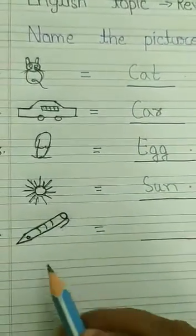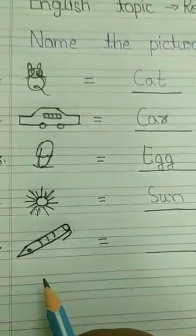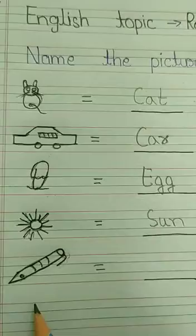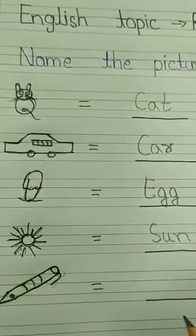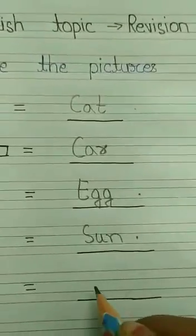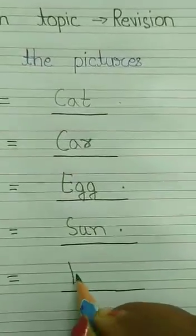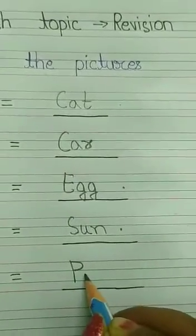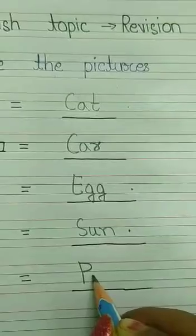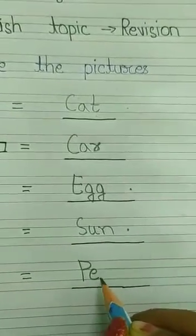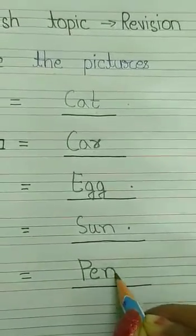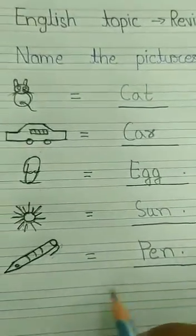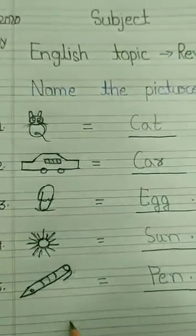अब picture क्या है? Pen बना है ना. अब चित्र का हमें नाम लिखना है क्योंकि 'Name the Picture' था, यानि हमें चित्रों का नाम लिखना है. तो pen है तो हम लिखेंगे P-E-N, pen. Pen means pen होता है.